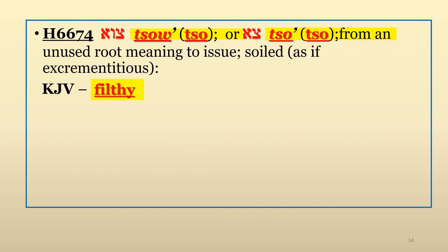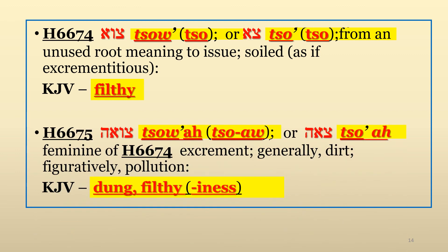The last Hebrew word we will discuss in this video is Strong's number 6674, pronounced Tso and spelled T-S-O. It means anything filthy. The feminine form, Soa — Strong's number 6675 — also means filthiness, and both forms can include any kind of filth that issues out of the body, including dung and vomit.